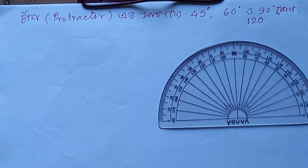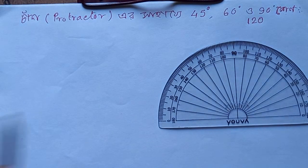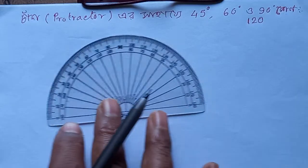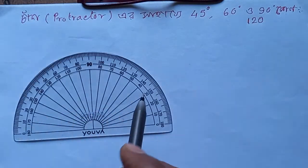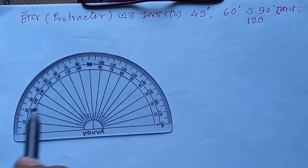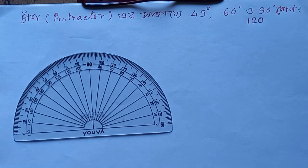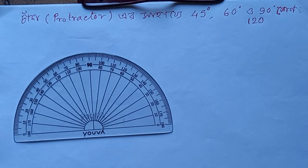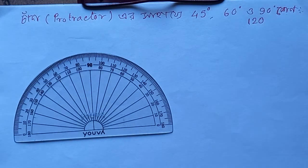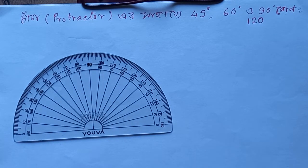Mathematics for Mankind Online Classes. Today we have 45 degrees, 60 degrees, 90 degrees, 120 degrees. This is what we have to do.